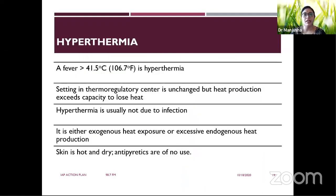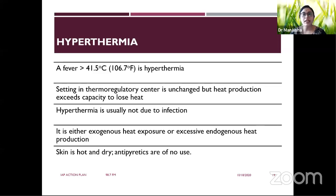Pyrexia or fever is a rectal temperature more than or equal to 38 degrees Celsius or 100.4 degrees Fahrenheit. Hyperthermia is a fever more than 41.5 degrees Celsius or 106.7 degrees Fahrenheit, where the body is heated to an extent that it cannot bring down the temperature. The key difference is that the hypothalamus is not involved in hyperthermia — the hypothalamic thermoregulatory center is intact, but there is either excessive heat production or defective heat loss.